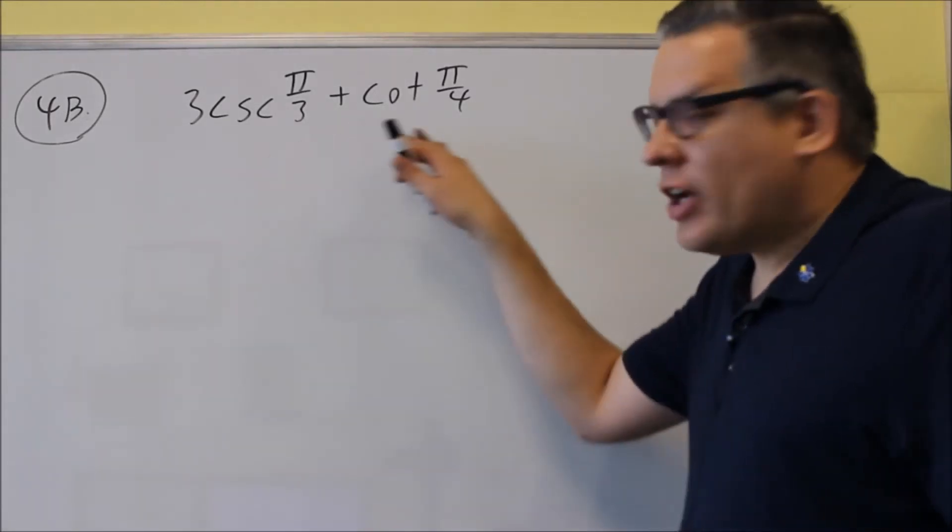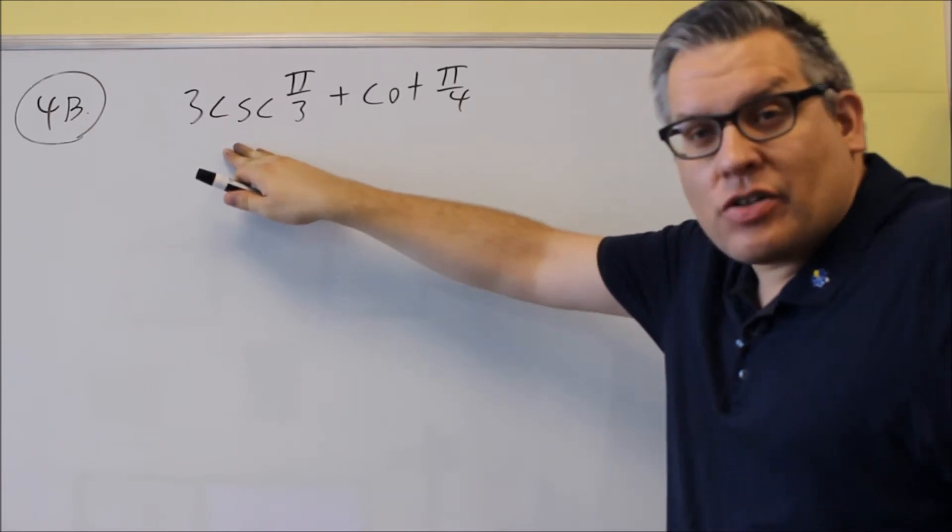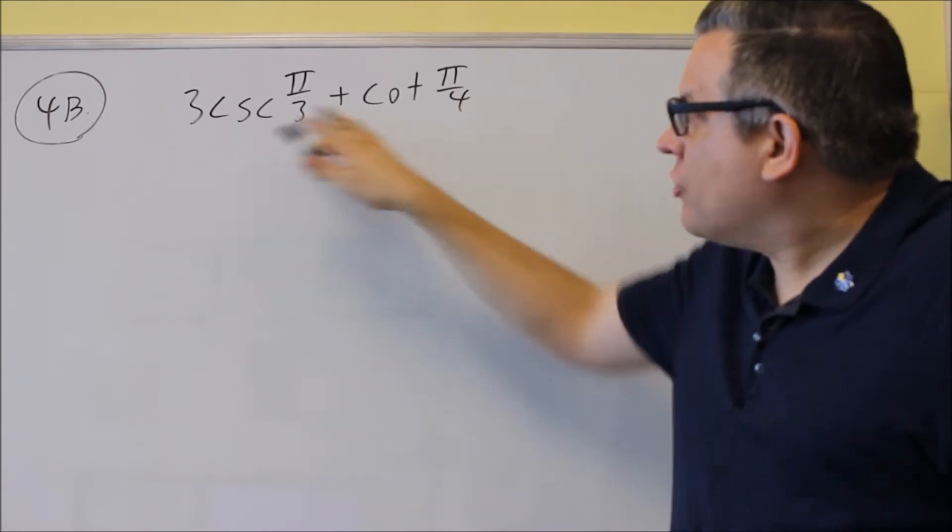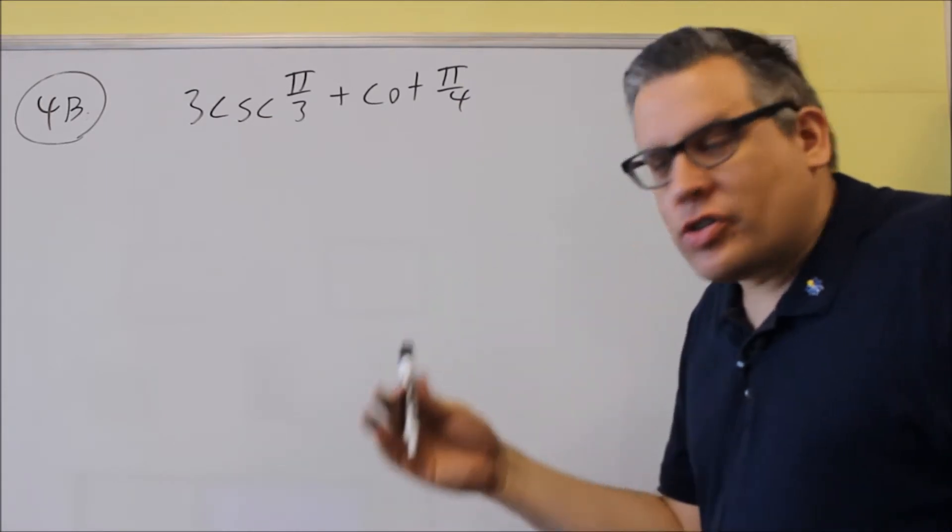Okay, for 4b, another one, we ought to find the exact value. Again, if you have things that are not sine, cosine, tangent, you can use the identities to change them, so that way you have the values from your unit circle or the table.